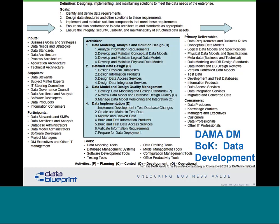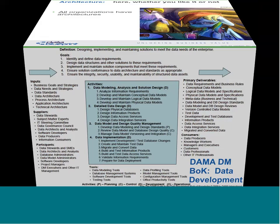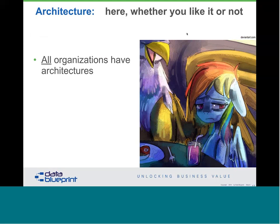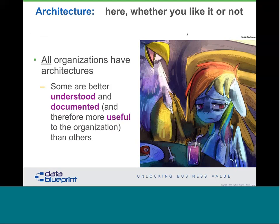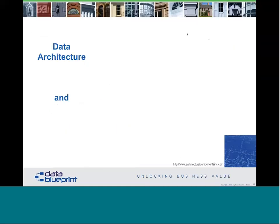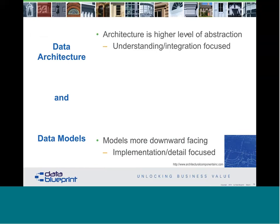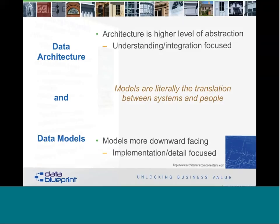Architectures and models are there whether you'd like them to be or not. All organizations have these models and architectures, but some are better understood and documented than others — that's the key. If they're not understood and documented, they can't be useful to the organization. Architecture gives you a high level of abstraction where understanding and integration are focused. Models are more downward-facing, talking about specific implementation details. Models are literally the translation between systems and people, as well as between architecture and implementation.